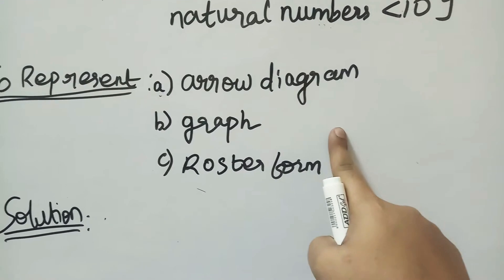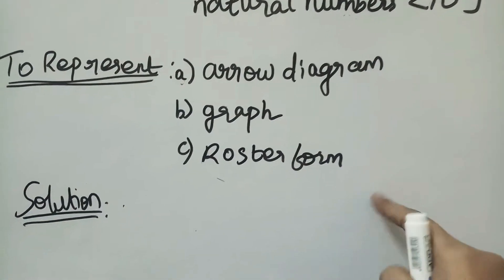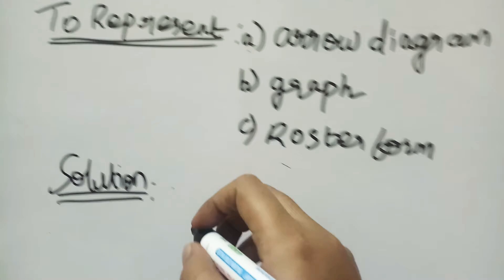An arrow diagram, graph, roster formula, and the relation represent. First of all, we have to learn the relation elements.